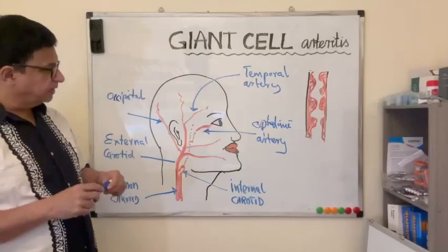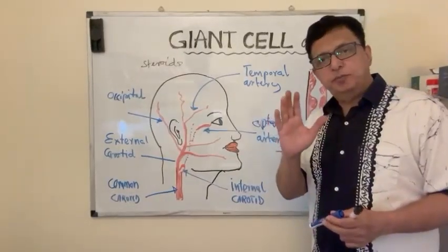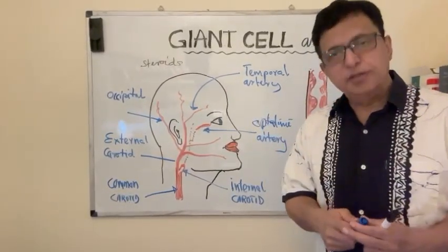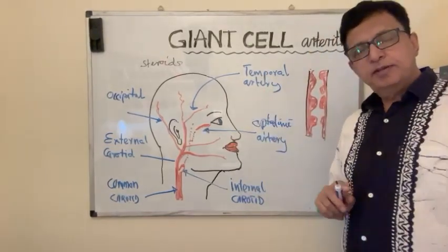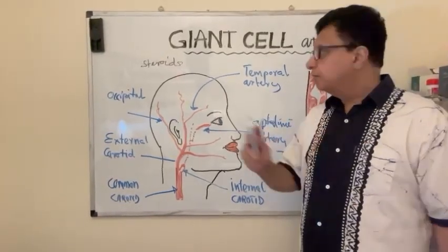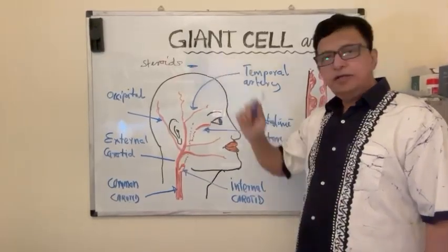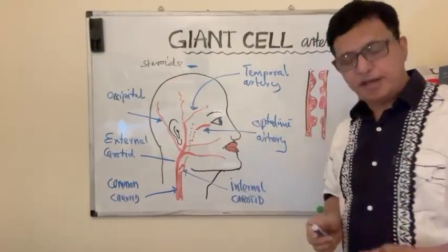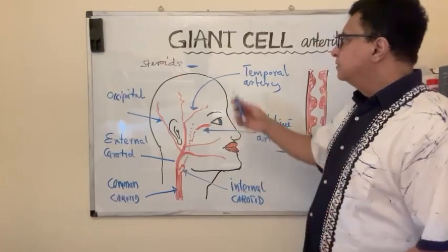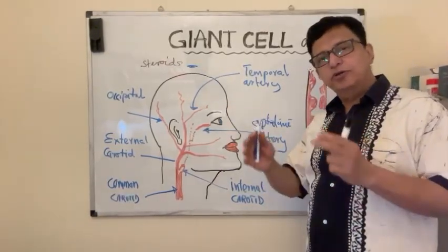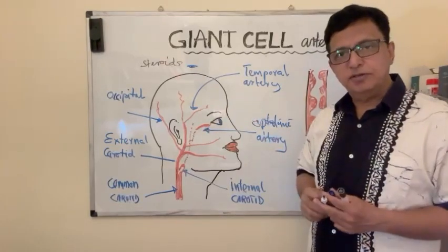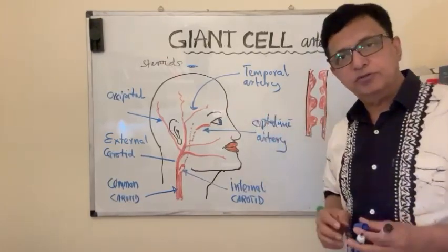When the patient comes with possible Giant Cell Arteritis or Temporal Arteritis, it's a medical emergency. The immediate treatment is to start with steroids and then confirm the diagnosis.